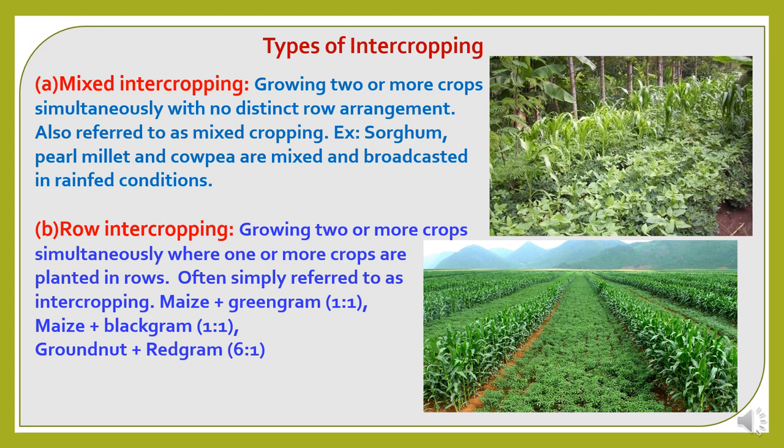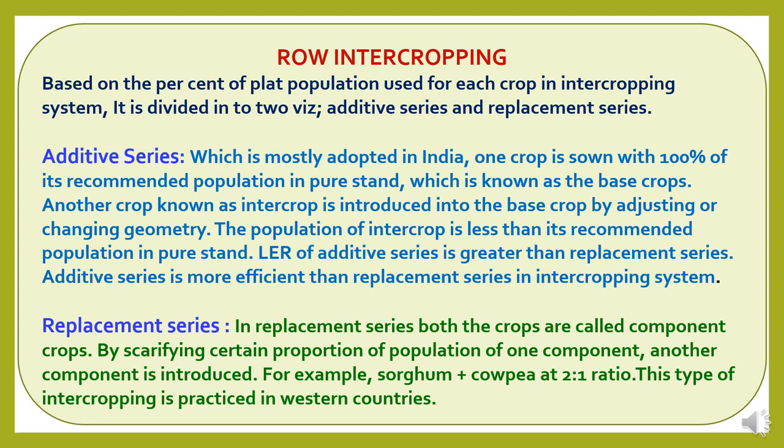Now for the types of intercropping: First is mixed intercropping — growing two or more crops simultaneously with no distinct row arrangement, also referred to as mixed cropping. For example, sorghum, pearl millet, and cowpea are mixed and broadcasted under rainfed conditions. Second is row intercropping — growing two or more crops simultaneously where one or more crops are planted in rows, often simply referred to as intercropping. Examples include maize plus green gram in a 1:1 ratio, maize grown with black gram in a 1:1 ratio, and groundnut plus red gram in a 6:1 ratio.